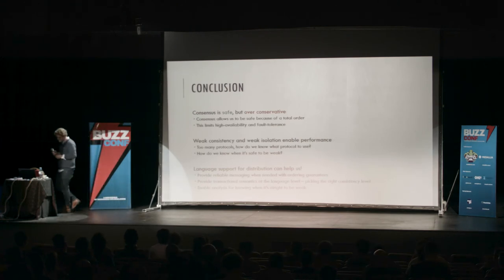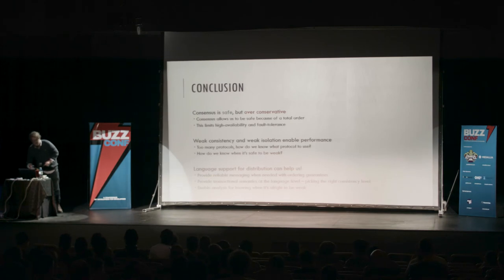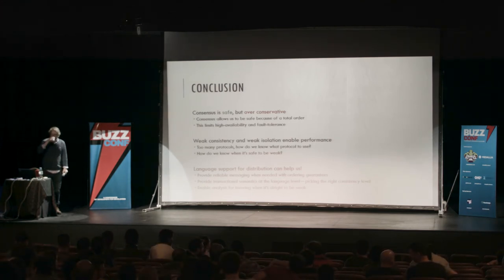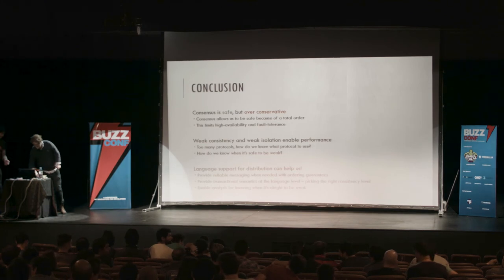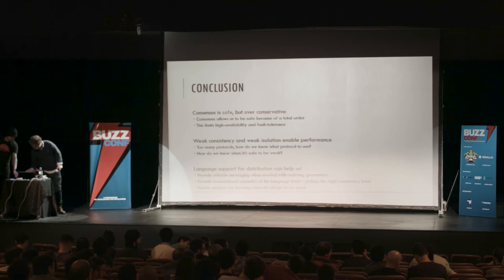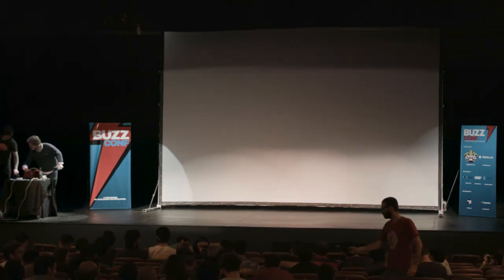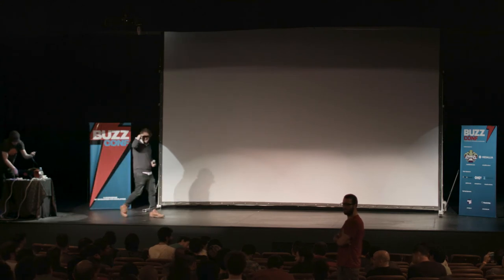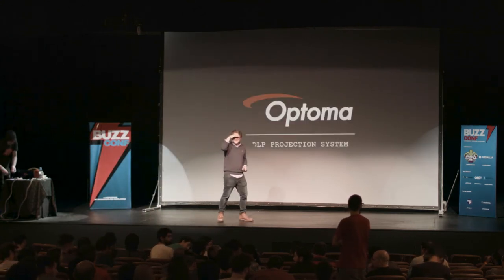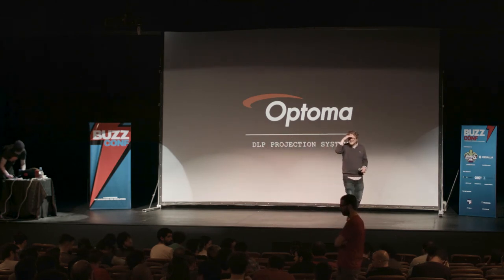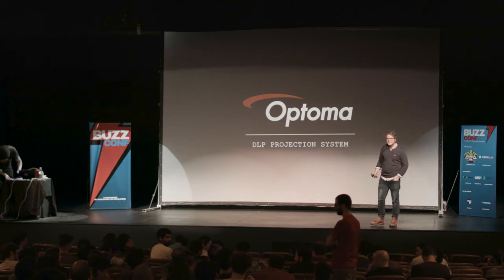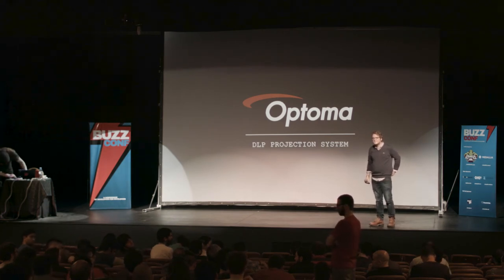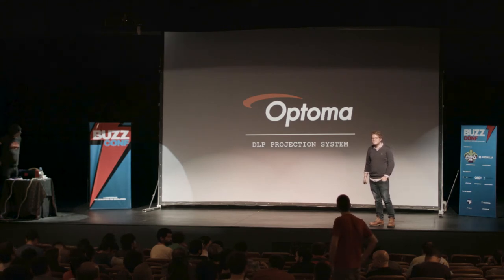Thank you very much. [Question from audience]: One thing I've always been scared about with weak consistency is that the boundary for a merge to happen is technically unbounded — a merge can eventually never happen. Are there systems that monitor this and bring awareness over whether merges are not happening?